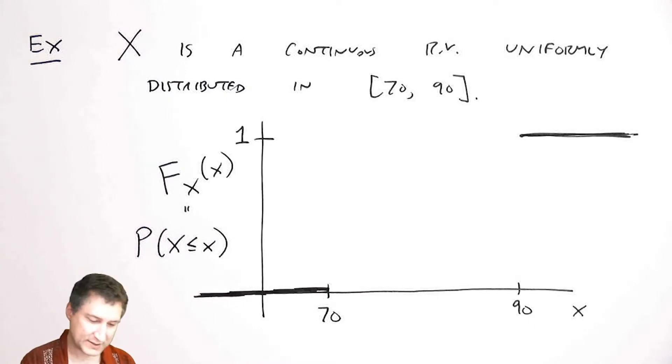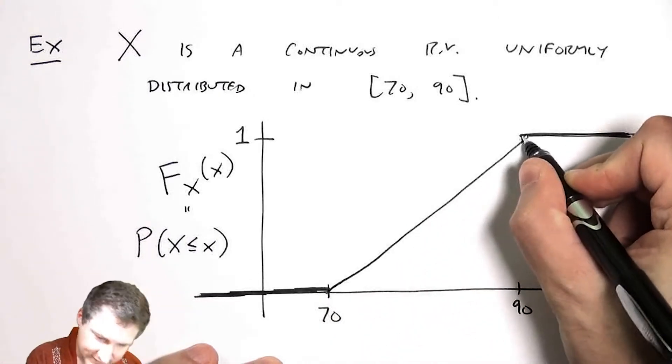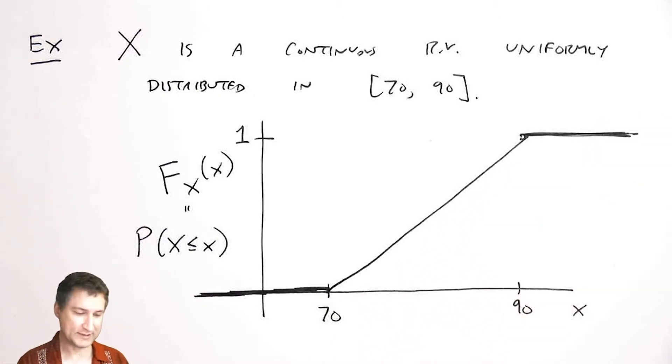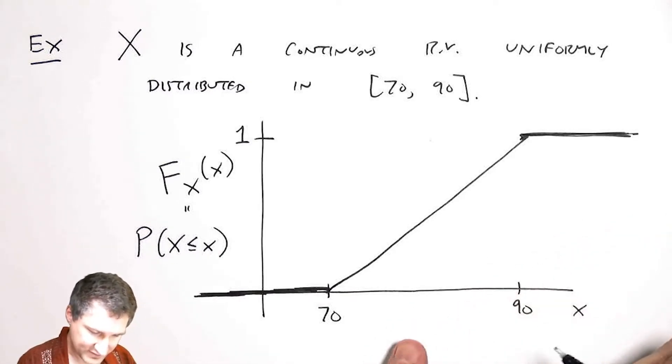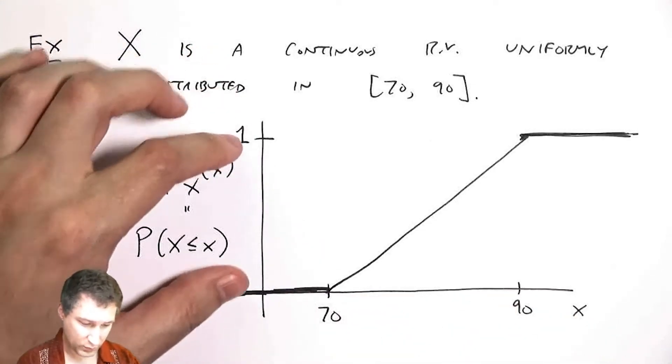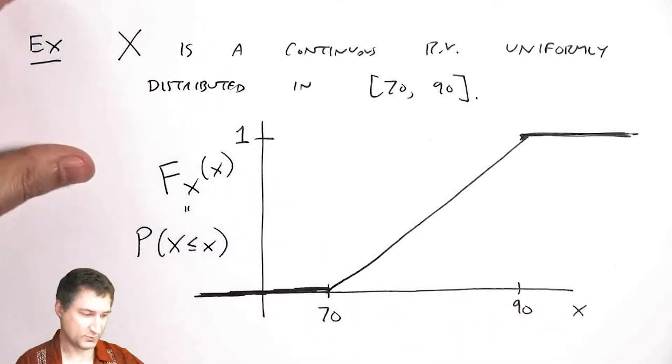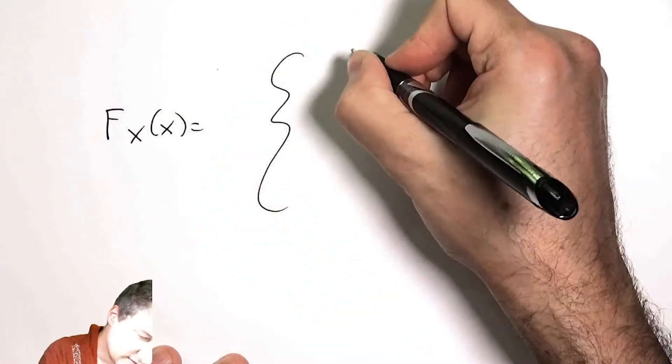Well, the definition of a uniform random variable is that this probability accumulates steadily at a linear rate. And so let me actually figure out what this function is. So before I flip to the next panel, the rise over the run is going to be one over 20th. So one 20th is the slope. I should be able to write down explicitly what the random variable is.